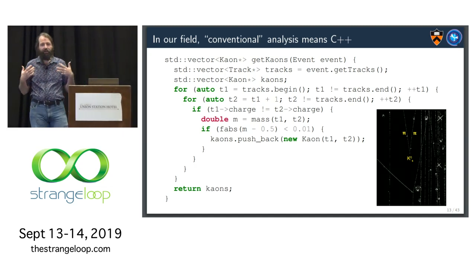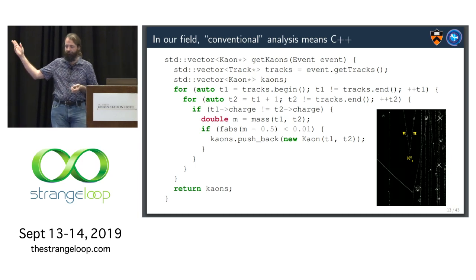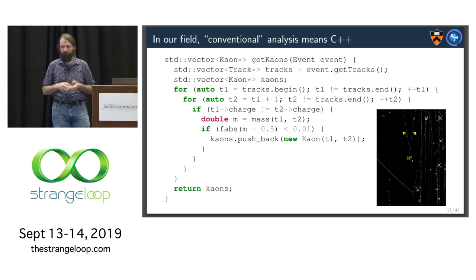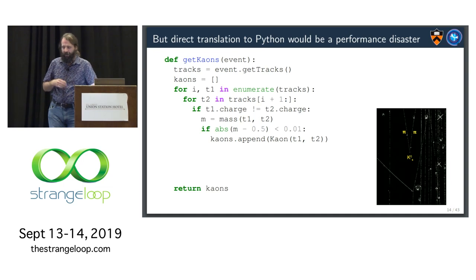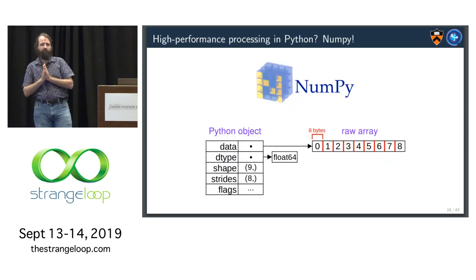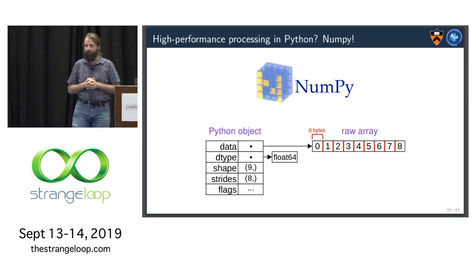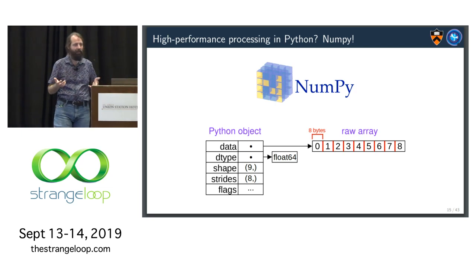So, in our field, a conventional analysis means you write loops on objects allocated on the heap in C++. And so, this is what the finding the two pions to find the kaon looks like. It's just C++ loops. We fill STD vector and such. A direct translation to Python would be a performance disaster. And in many cases, this is exactly what people do. And it is a performance disaster. Because Python objects are doing a lot of string comparisons and such.